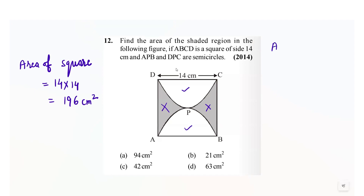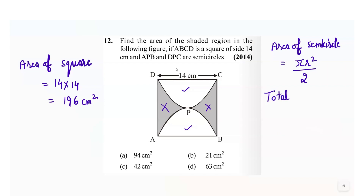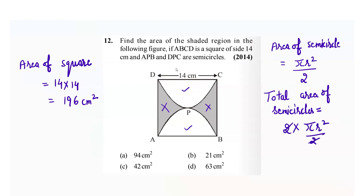Now we have to find out the area of a semicircle. Area of semicircle is equals to pi r square over 2. Now since we have two semicircles here, the total area of semicircles is equals to 2 times that, so we will get pi r square for the area of two semicircles.